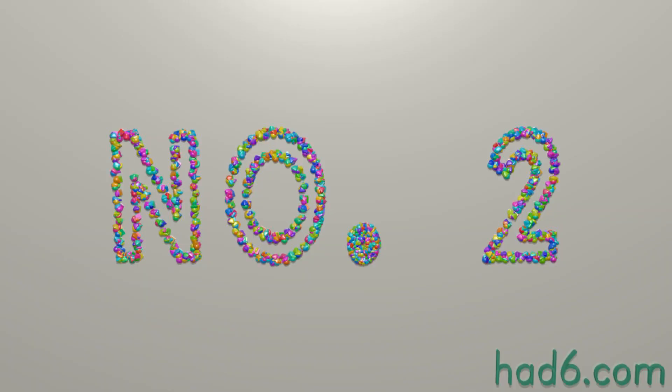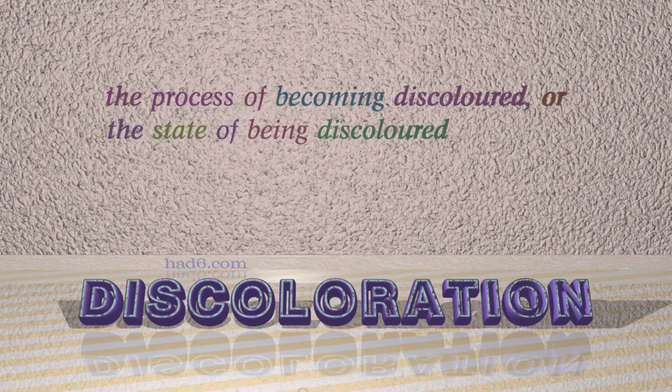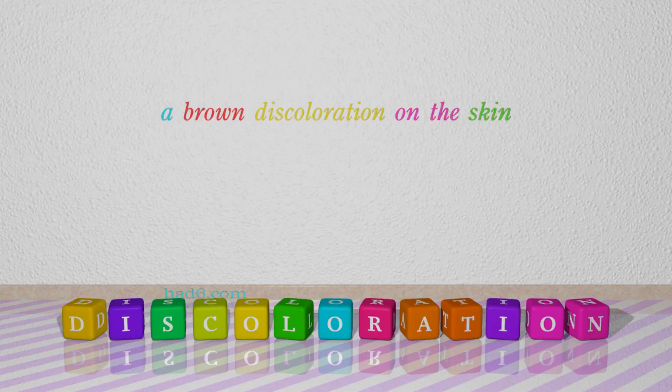Number 2: Discoloration. Which means the process of becoming discolored, or the state of being discolored. For example: A brown discoloration on the skin.